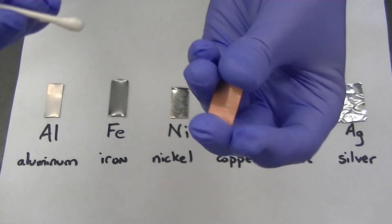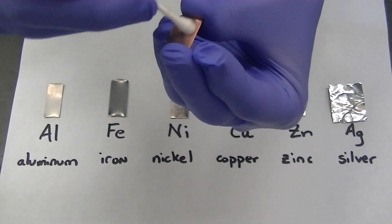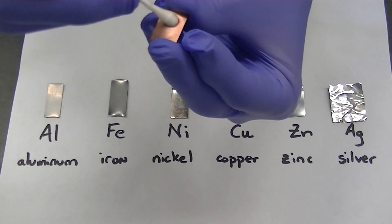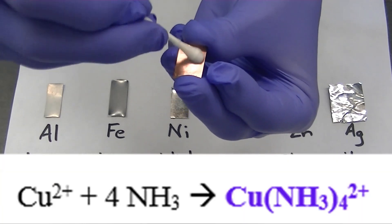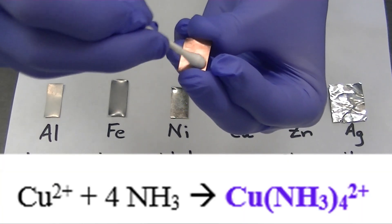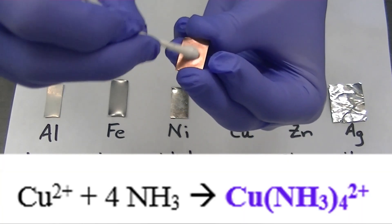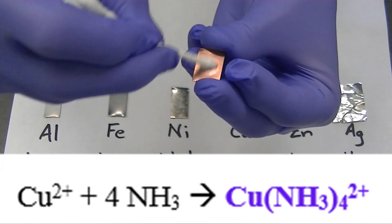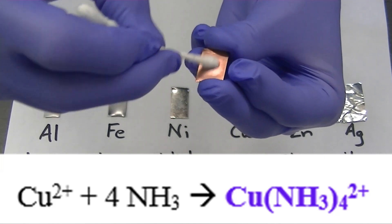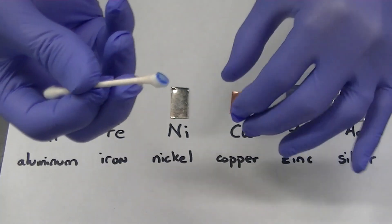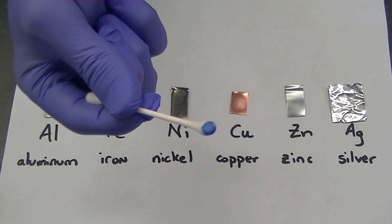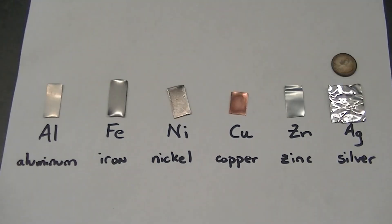I'm going to rub this Q-tip that's been soaked in 15 molar ammonia over the surface of this copper strip. Any copper ions present on the surface of the copper metal will react with the ammonia to form a blue colored complex. The vibrant blue color observed here is a positive test for copper.